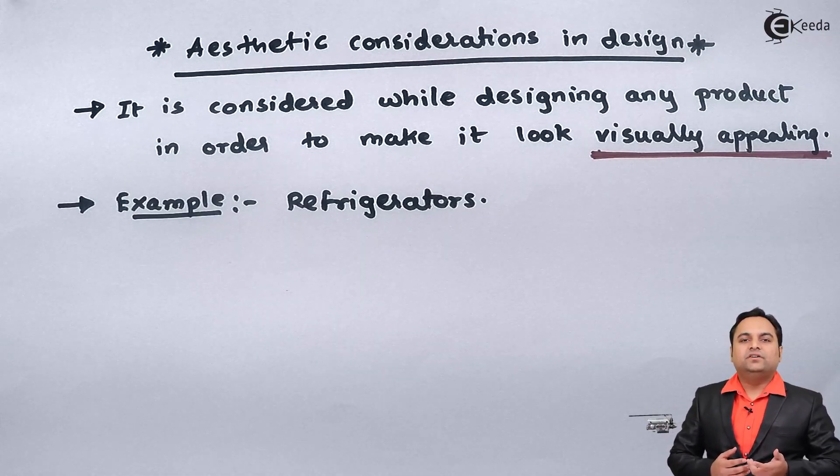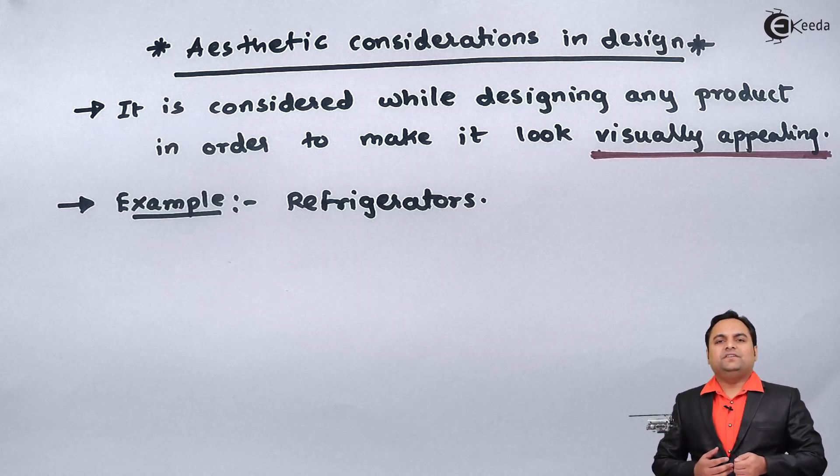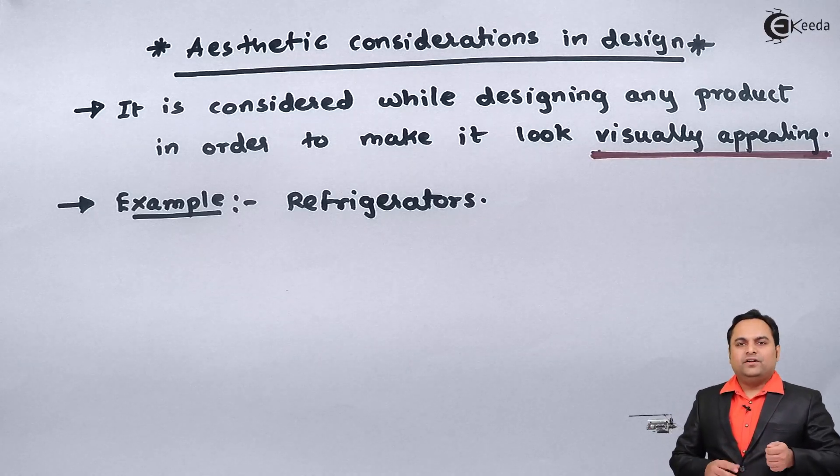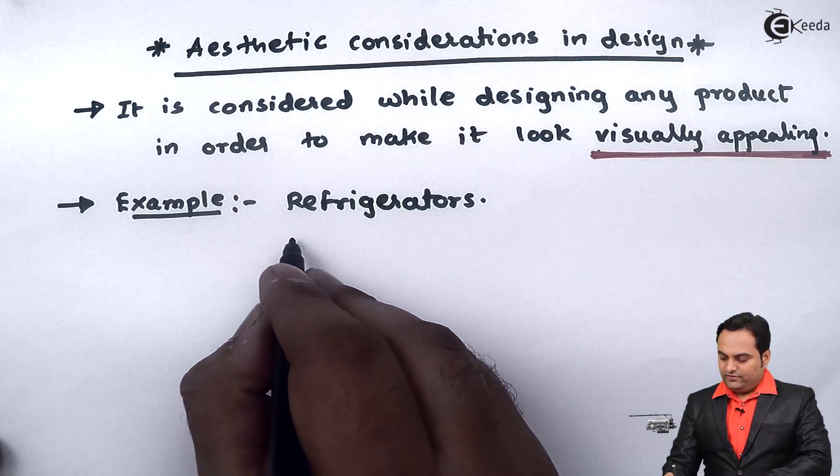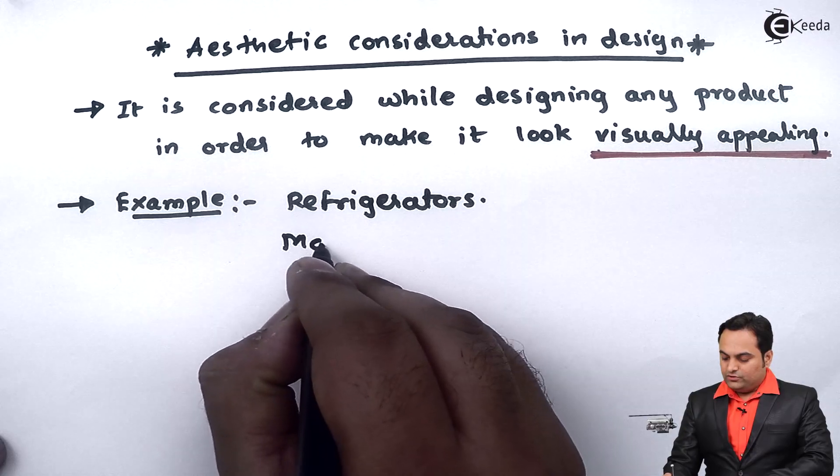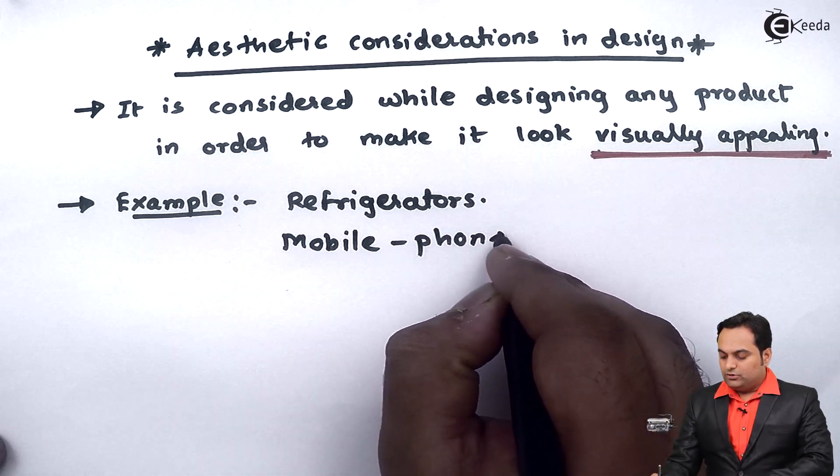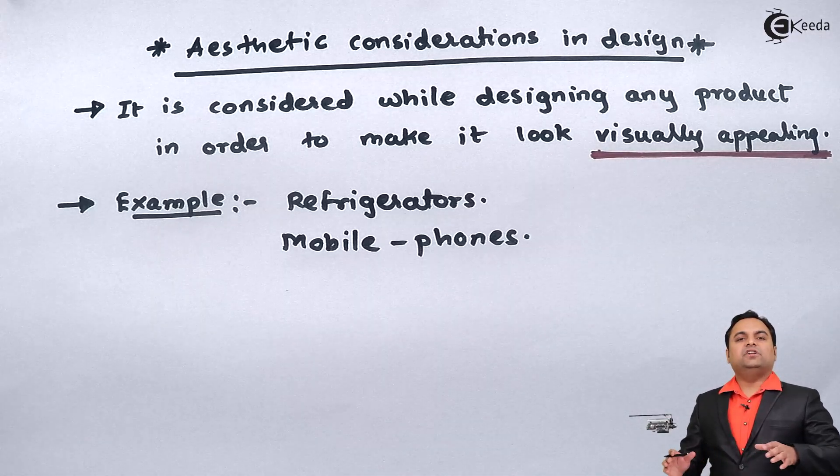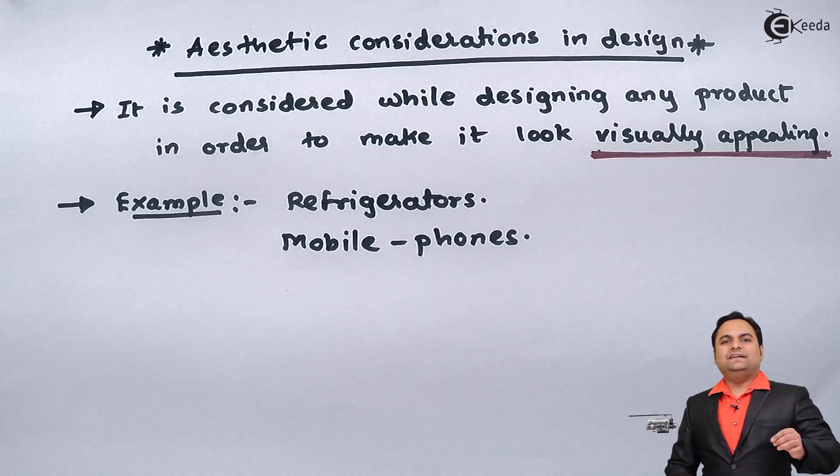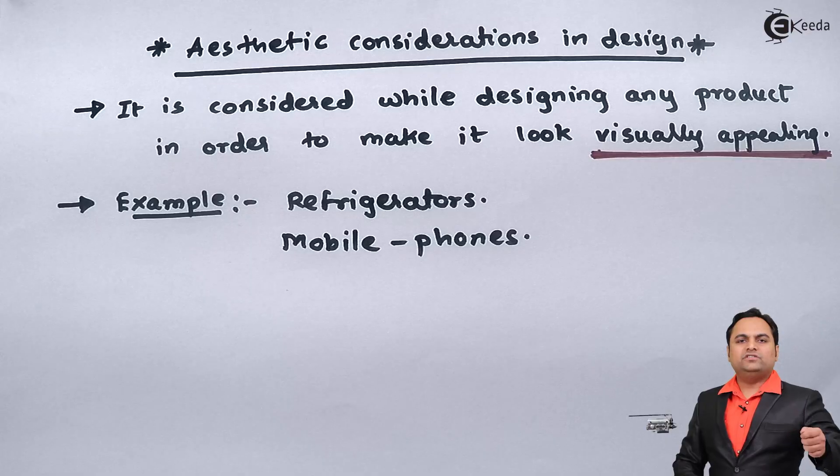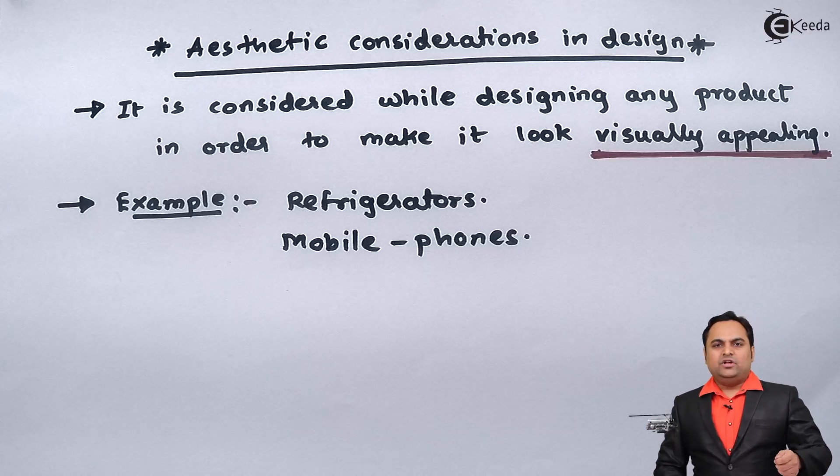we are going to select that. So that consideration is called aesthetic. Similarly, in case of mobile phones or cell phones, apart from the functional requirement, we select that cell phone which suits us - the cell phone which looks appealing to us.